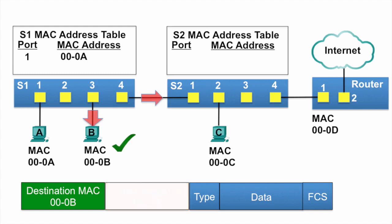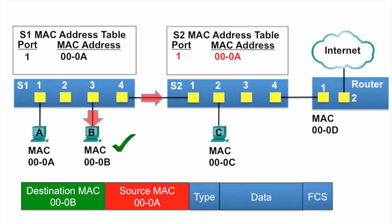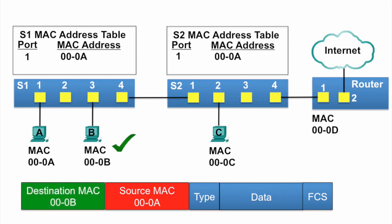Switch S2 examines the source MAC address of the frame and notices it is not in its MAC address table, so it adds the MAC address and the incoming port to its MAC address table. Next, switch S2 examines the destination MAC address, notices that it is not in its MAC address table, so it floods it out all ports.